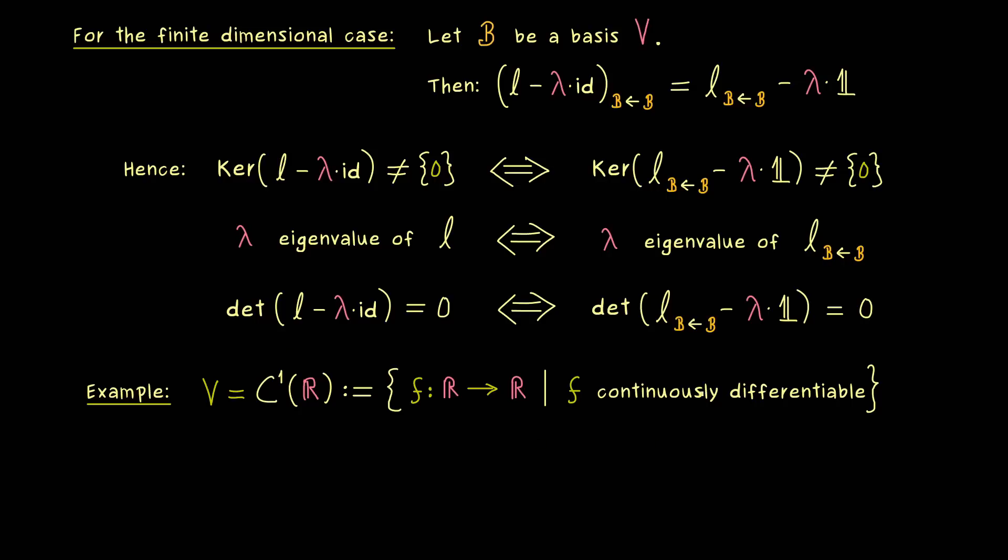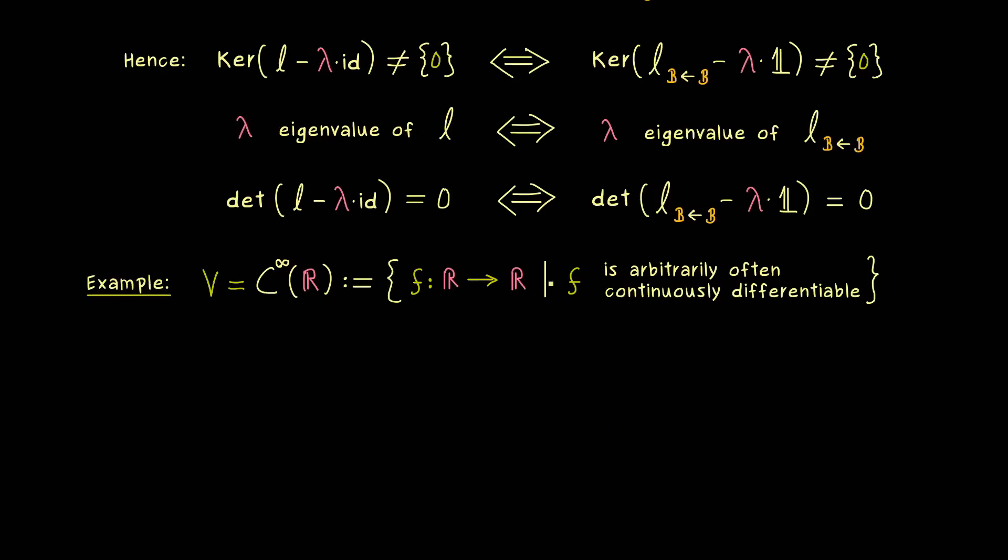So we would say we are in C² if the derivative is still continuously differentiable. And then if the second derivative is still continuously differentiable we would say we are in C³. So in the end we can go to C∞ where all derivatives of f exist. And in words we would describe it as f is arbitrarily often continuously differentiable. So for example all polynomials lie in this space for sure.